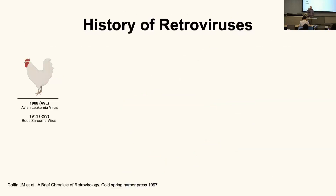We haven't known about retroviruses for really all that long. The first retrovirus was identified as a cancer-causing agent in 1908 — that's avian leukemia virus, which was isolated from chickens. Shortly after, the second retrovirus was isolated from chickens: Rous sarcoma virus. This is an interesting virus because it's the first oncogenic retrovirus that's been described, and oncogenic means it's a retrovirus that causes cancer.